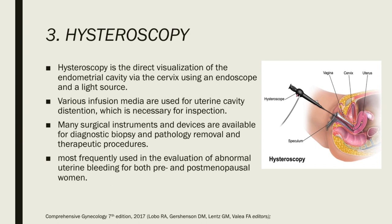The third procedure is hysteroscopy — the direct visualization of the endometrial cavity via the cervix using an endoscope and a light source. Various infusion media such as water or gas are used for uterine cavity distension, which is necessary for inspection. Many surgical instruments and devices are available for diagnostic, biopsy, pathology removal, and therapeutic procedures. Hysteroscopy is most frequently used in the evaluation of abnormal uterine bleeding for both pre- and postmenopausal women.